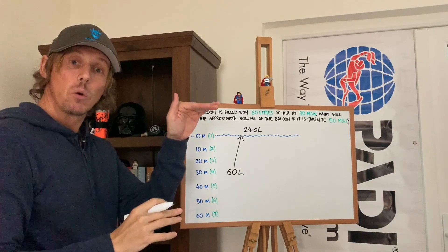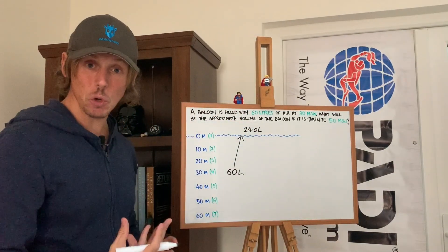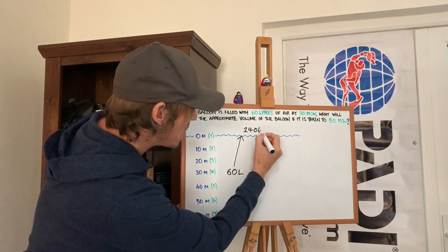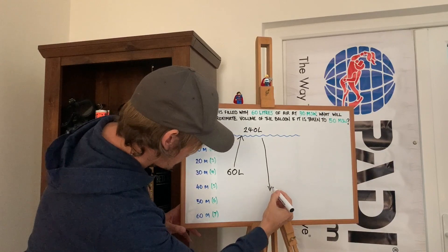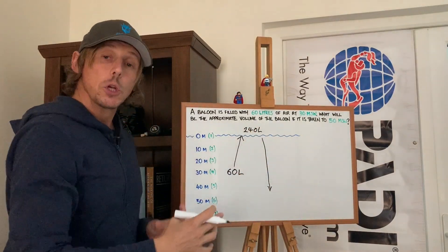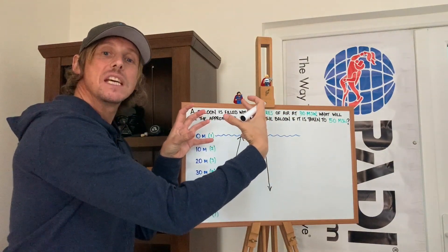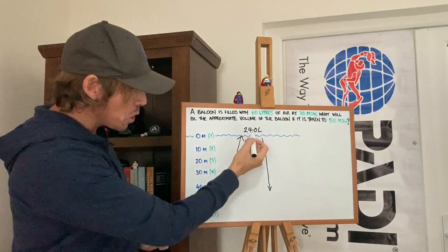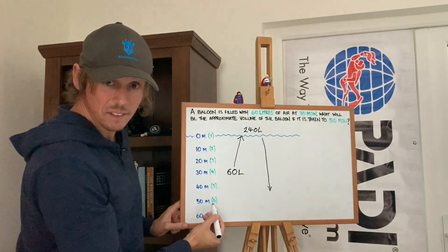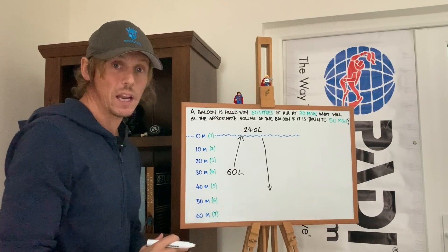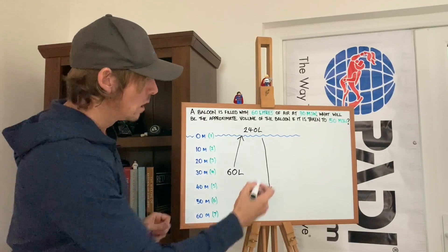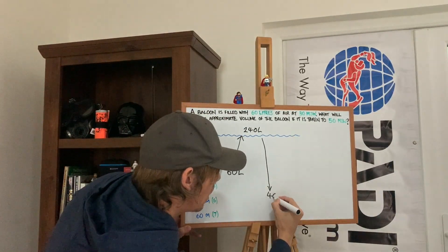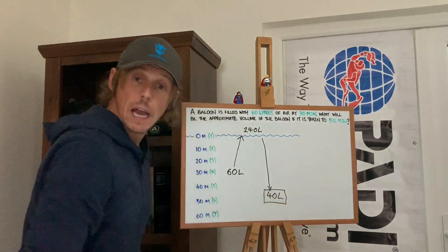That's part one. Now the plane comes into land, which is us taking it back down to its new depth. The new depth in the question is 50 meters, which is six atmospheres. So we take the 240 liters down to 50 meters. It's a flexible container, so it's going to compress and get smaller — six times smaller. How do we make a number smaller? We divide it. 240 divided by six is 40. And that is the answer to our question.